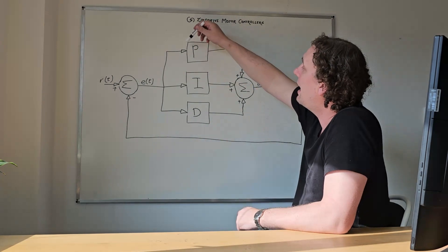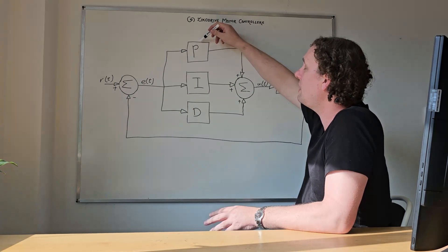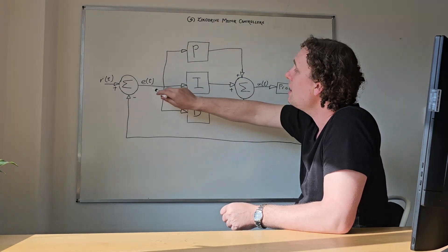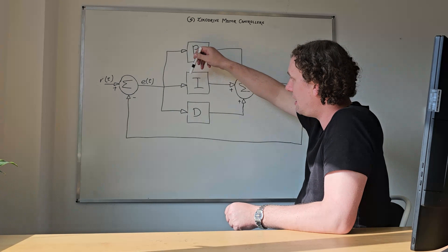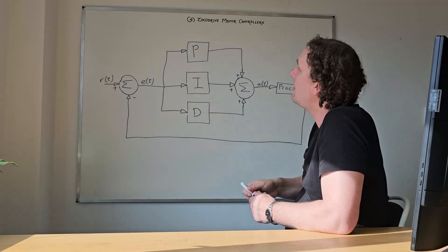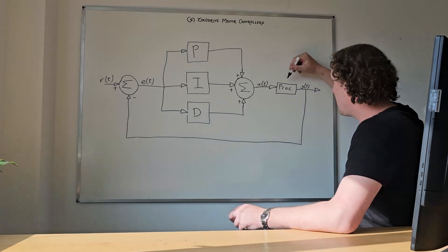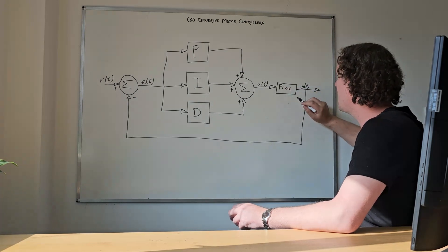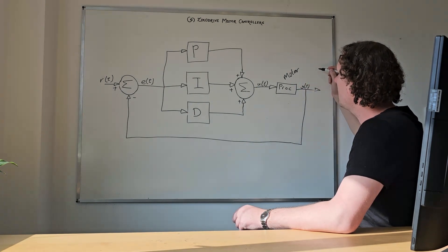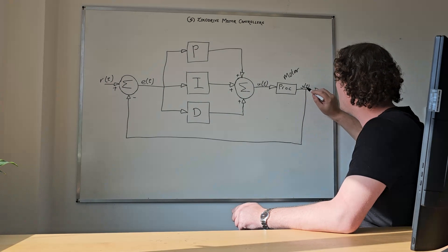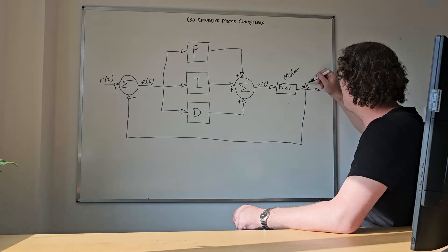For the proportional term — this is a simple term used within the tuning of the PID system — your error is multiplied by the proportional term. It's then also multiplied by the integral term as well as the derivative term. The sum of the error multiplied by these terms are then added all together to get an output function which runs through the process. In our case, that process would be the motor.